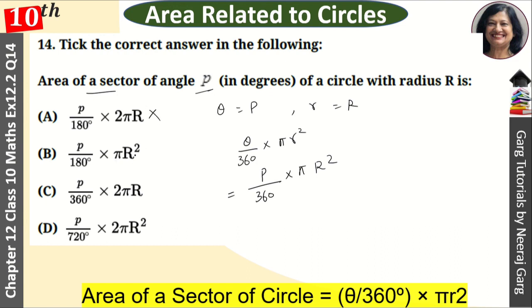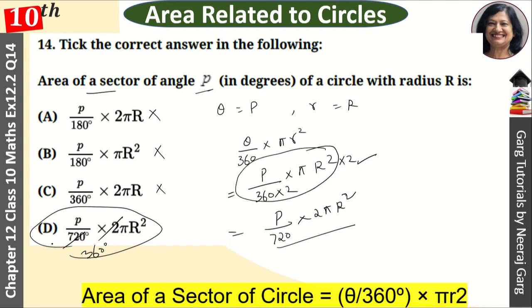P upon 180 into πR² - this is not it. P upon 360 into 2πR - this is not it. P upon 720 into 2πR² - wait, this simplifies to P upon 360 into πR².